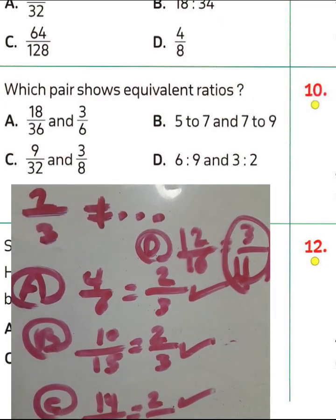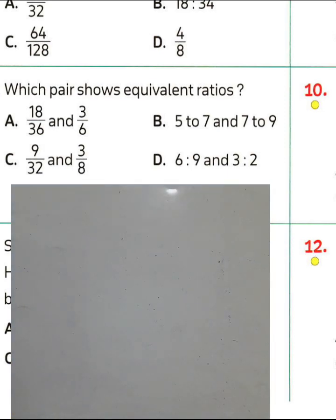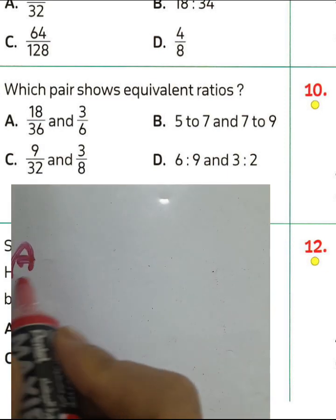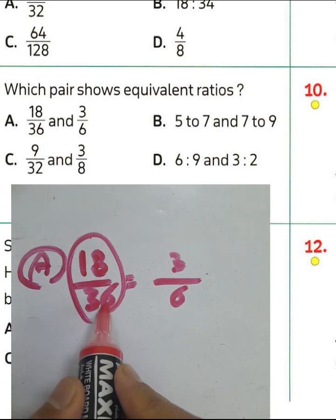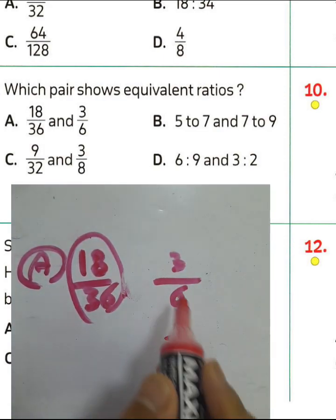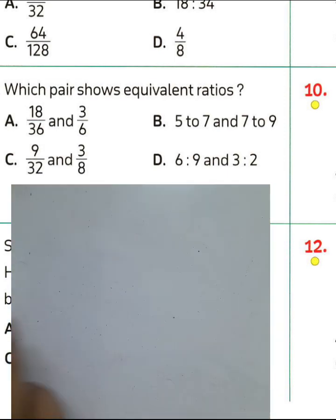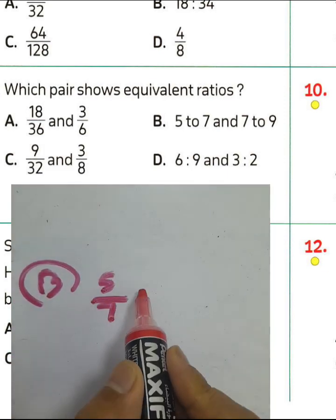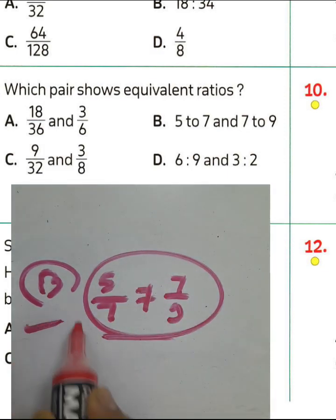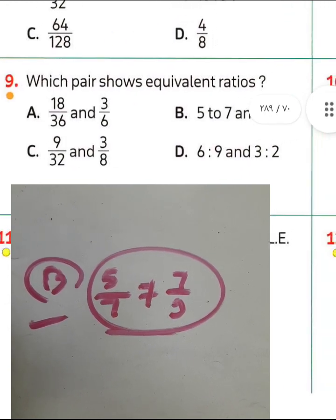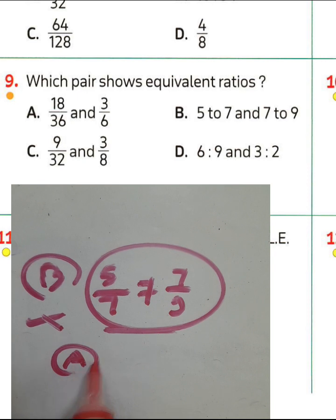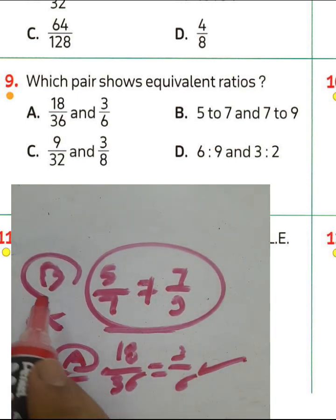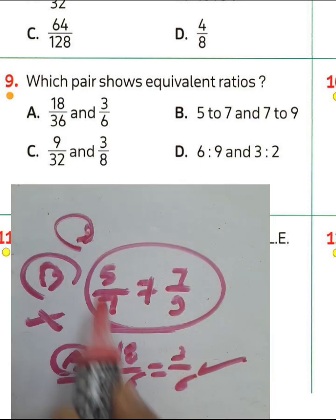Question number 9: which pair has an equivalent ratio? You can use the product of extremes and means — if the product of extremes equals the product of means, the ratios are equal. Letter A: 18 over 36 and 3 over 6. Since 18 is half of 36 and 3 is half of 6, they are equivalent. Letter B: 5 to 7 is not equivalent to 7 to 9. So choose letter A, it is equivalent.